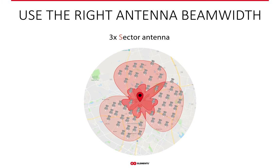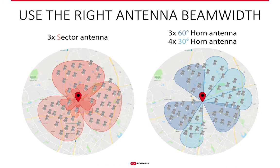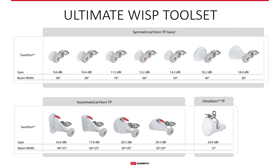Instead of using just one type of patch array sector with fixed beam width regardless of the customer base position, Horns let you cover customers optimally depending on the customer density and positioning. You can select the Horns with corresponding beam width and not waste any of the signal you're transmitting or receiving. With seven different symmetrical, three asymmetrical Horns, and the Ultra Horn, you have plenty of options to plan your network coverage in a highly granular way and keep adjusting it depending on how your customer base expands or shrinks.